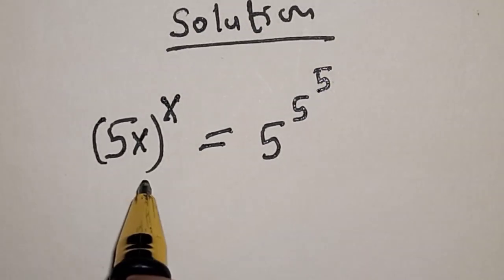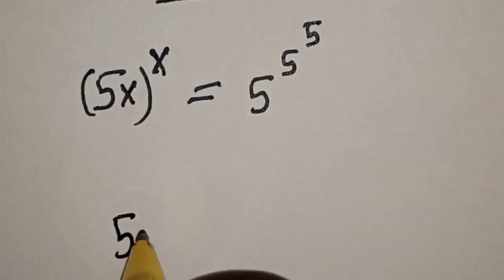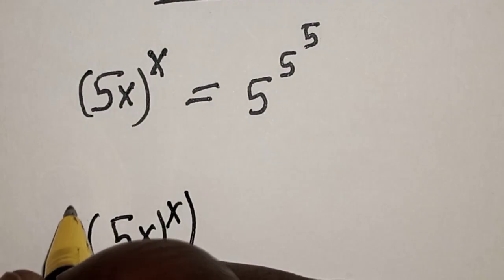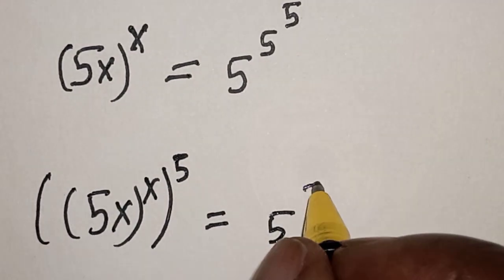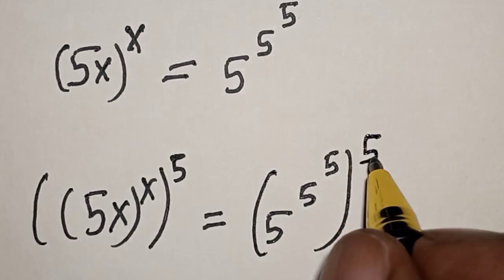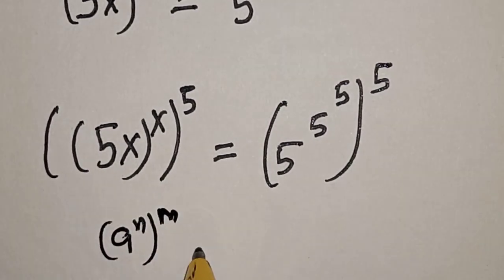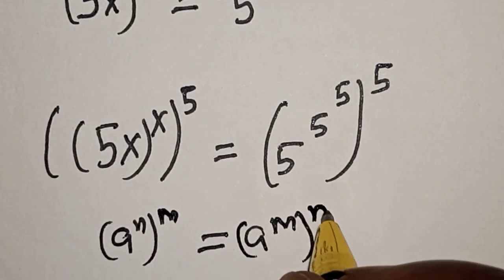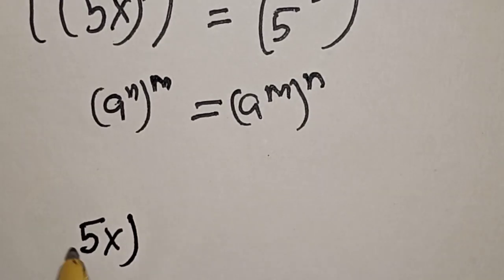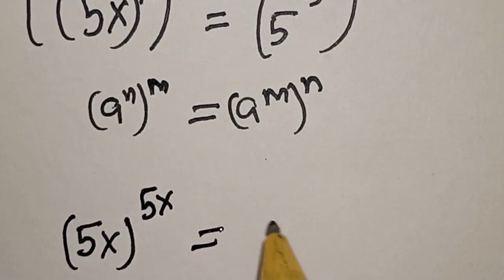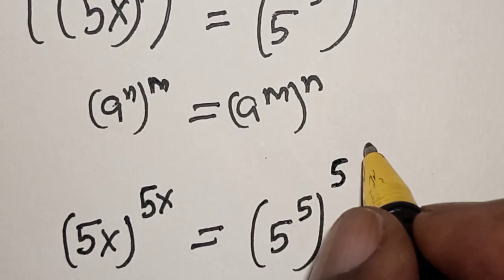Then let's take the power of both sides by 5. That is, 5x raised to power s raised to power 5 is equal to 5 raised to power 5 raised to power 5 raised to power 5. Remember this rule: if you have a raised to power n raised to power m, this is equal to a raised to power m raised to power n.